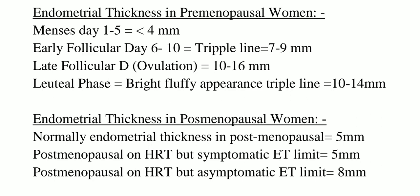These values are different for postmenopausal women. Before making a diagnosis of endometrial hyperplasia, we should check the stage the woman is presenting at. Normally in the postmenopausal woman, the endometrial thickness limit is 5 mm. For postmenopausal women on HRT who are symptomatic, the endometrial thickness limit is also 5 mm.